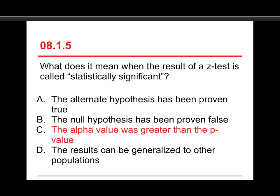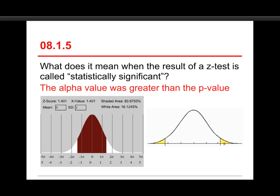Let me mention very quickly, A and B are not accurate, because we're dealing with a probabilistic exercise. There's imprecise measurement, there's always the possibility of error or exceptions, and so you don't want to talk about proving anything wrong or proving anything true. Also, D, the results can be generalized to other populations, that has more to do with how you gathered your sample data, not with whether the results are statistically significant.